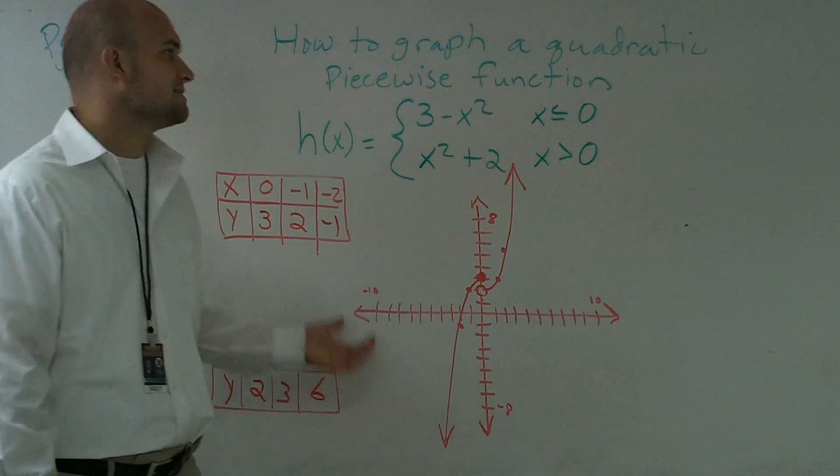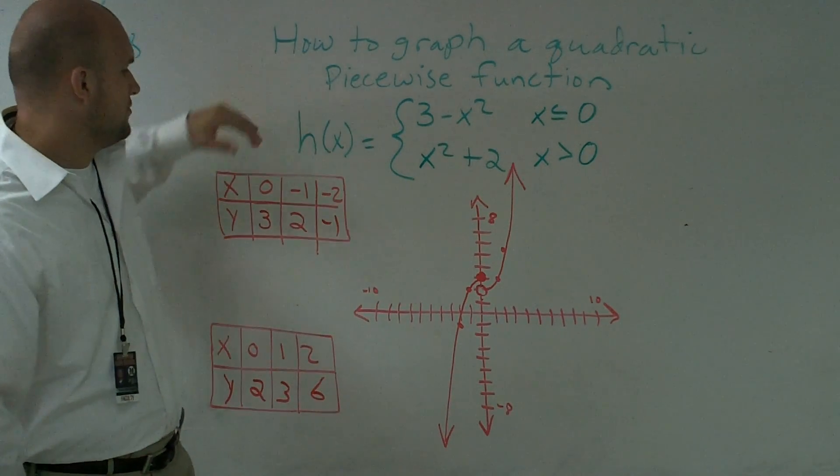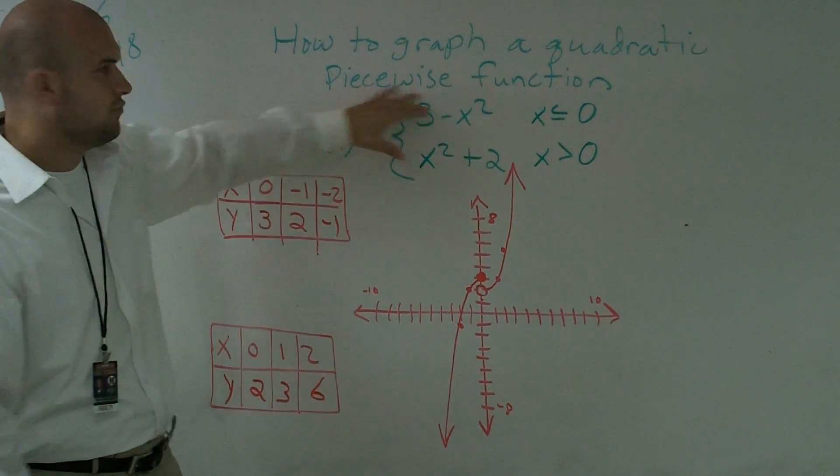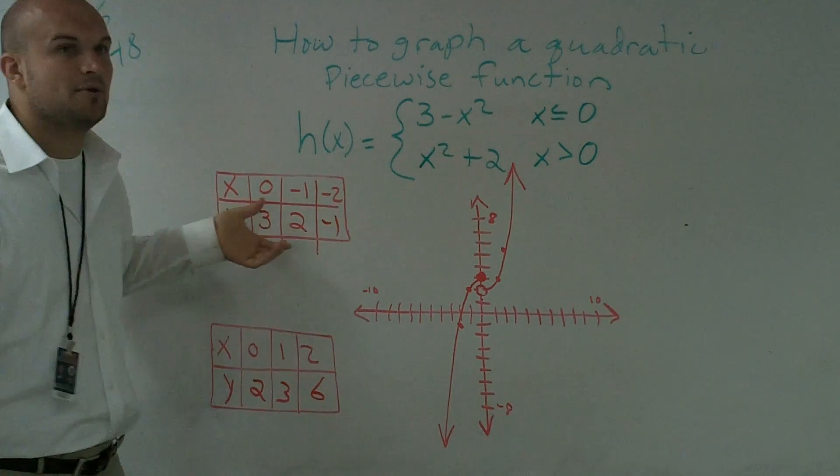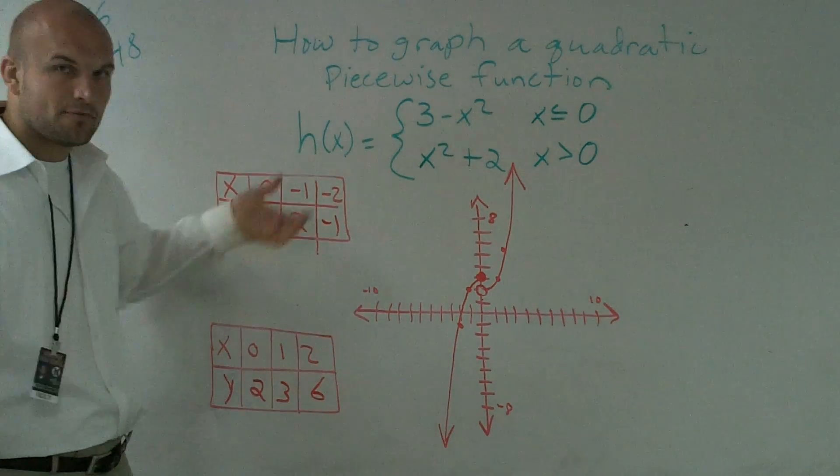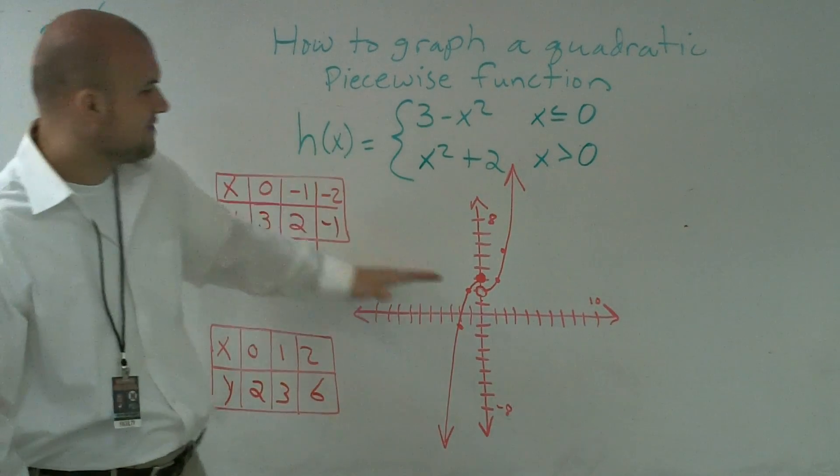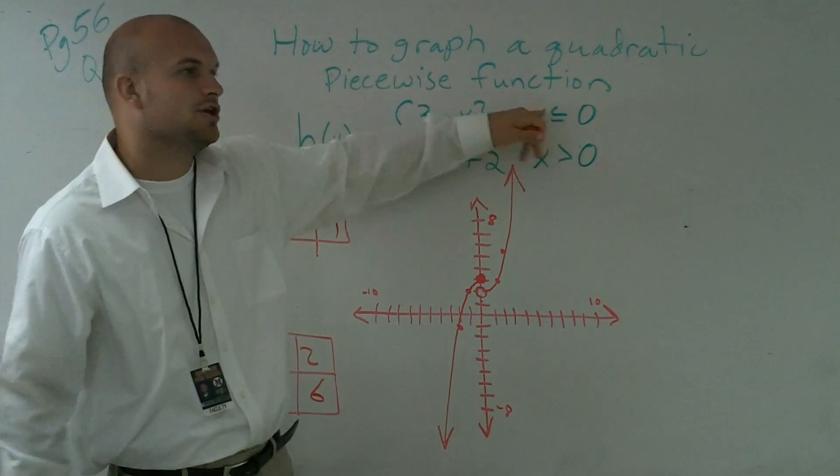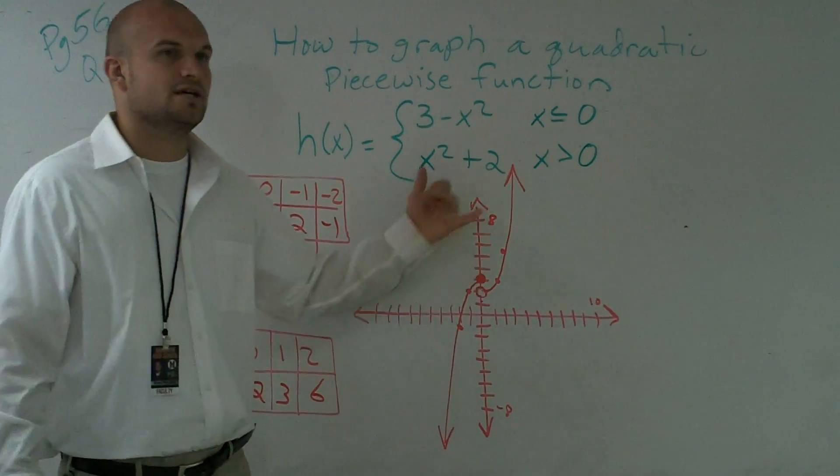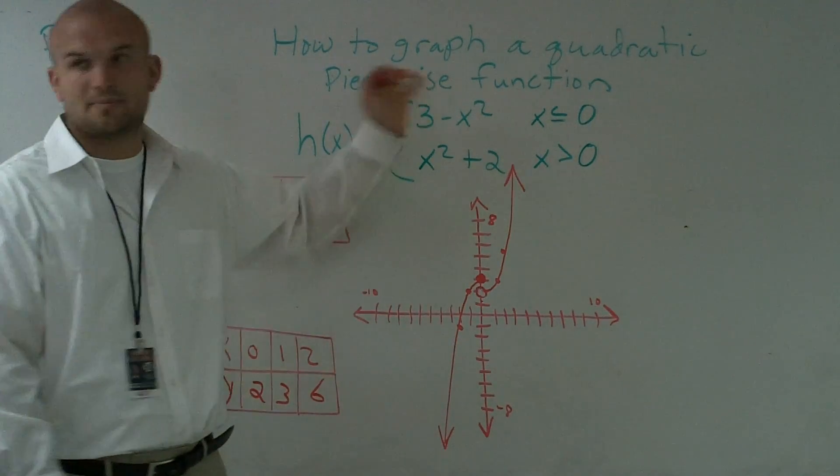So therefore, this is how you graph the piecewise function. What you need to make sure that you do is for each function, you create a table of at least 3 points to give you your graph. And you just follow the kind of forms. And then make sure you follow your constraints. And you either use the closed or open circle to represent the constraints.